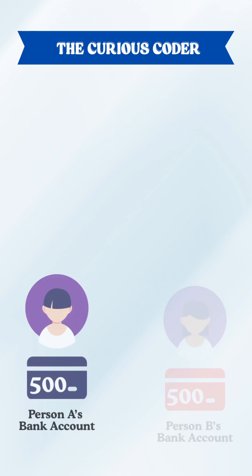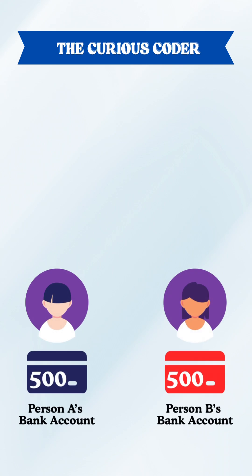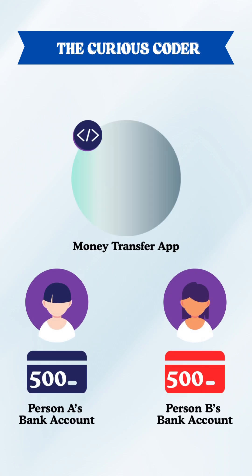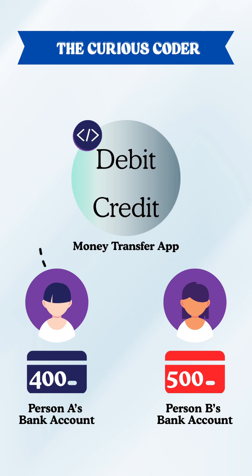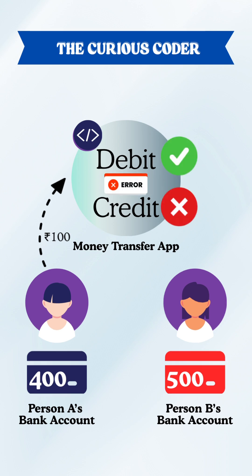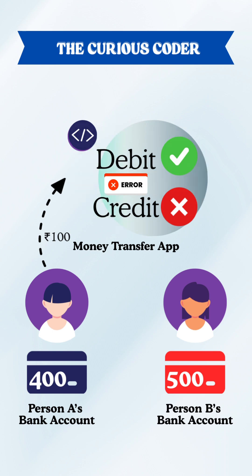Imagine this: you have person A and B with an initial balance of Rs.500. You made an application that first debits from person A and then credits to person B. You tried to transfer Rs.100, but there's an error between the two operations — the debit goes through but the credit fails. Now your data is inconsistent and you have lost money in the system.